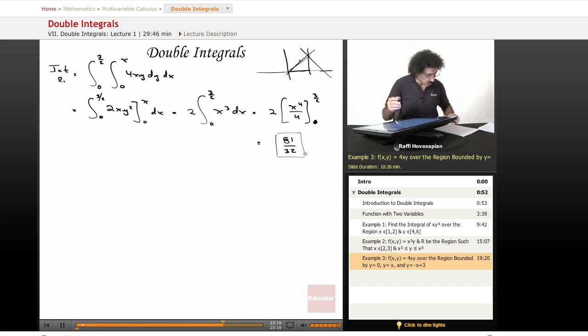Now we'll do the integral over the second region, this region right here. So the integral over region 2 is equal to, now we're integrating from 3 halves to 3. So 3 halves to 3, and the y value is going to be 0 to minus x plus 3, because now the upper function is minus x plus 3. And again, our function is 4xy dy dx.